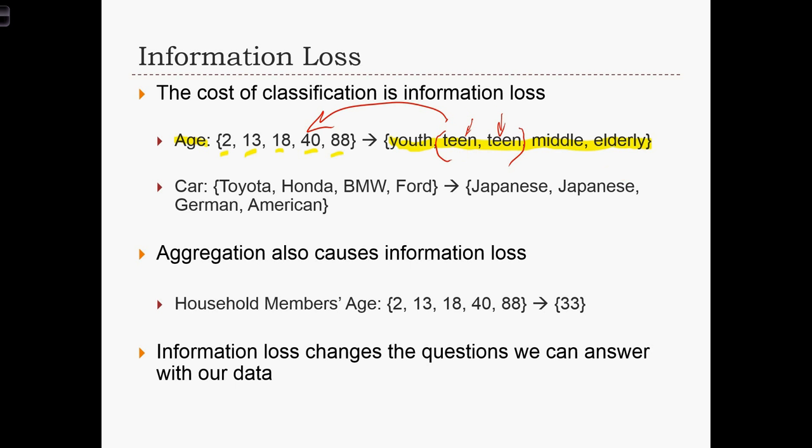In a large data set of hundreds, thousands, or millions of records, the problem of information loss still exists. For example, with cars and their brands — Toyota, Honda, BMW, and Ford — if we recode them by country of origin, Toyota and Honda become Japanese, BMW is German, and Ford is American. We now have two Japanese cars in our classified data set, but we no longer know what make those Japanese cars are. If the difference between a Toyota and a Honda was important, we've lost that information.